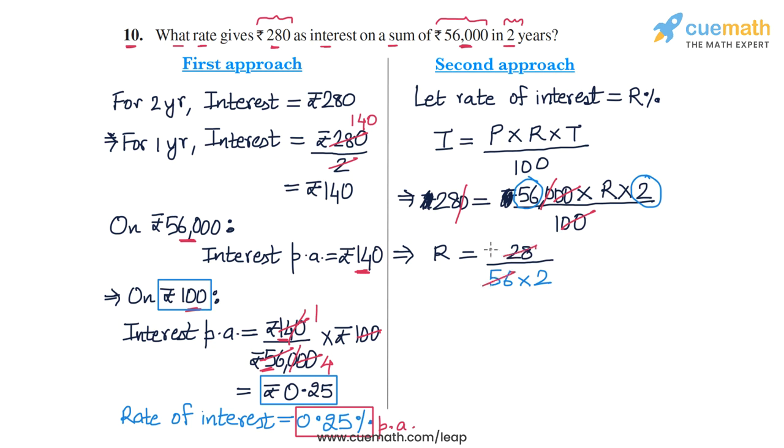Now 28 and 56, this gives you 1 by 2, and 2 into 2 is 4. So the rate of interest will come out to be 1/4. Once again, we arrive at the same answer that the rate of interest is 1/4% per annum, which we can write as 0.25% per annum.